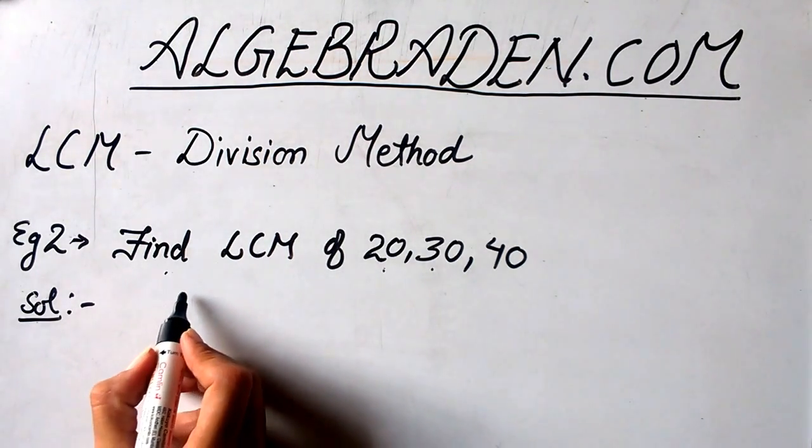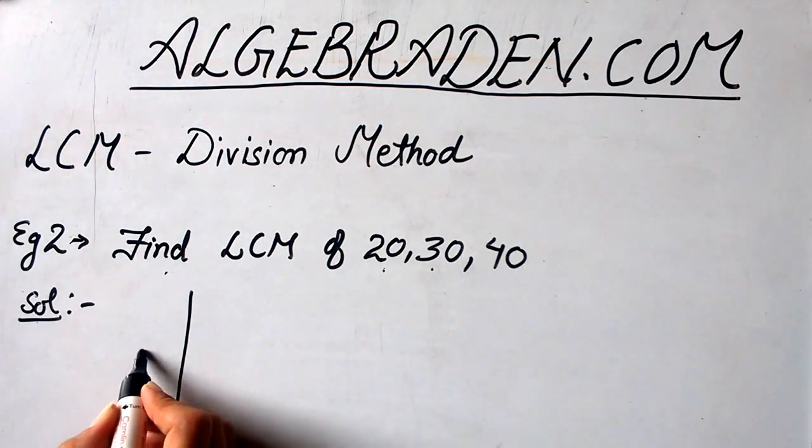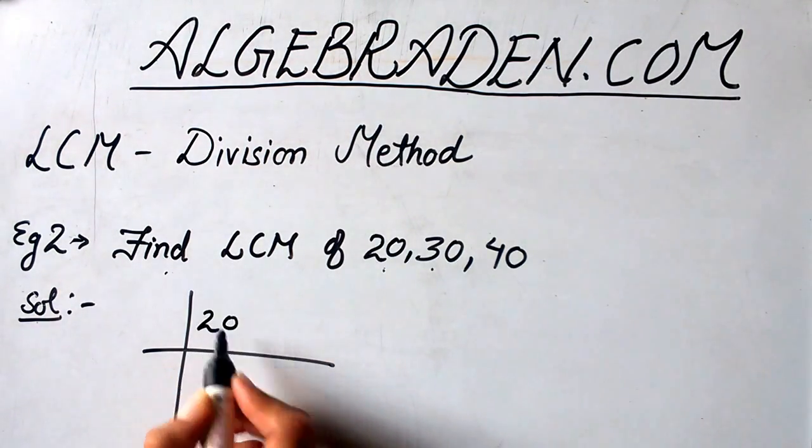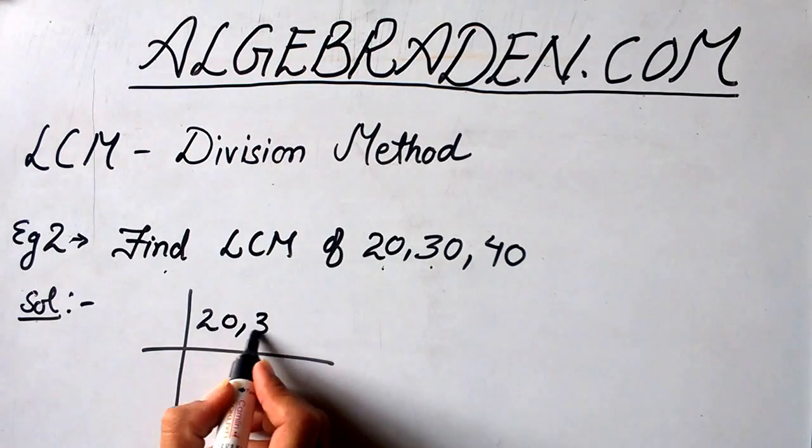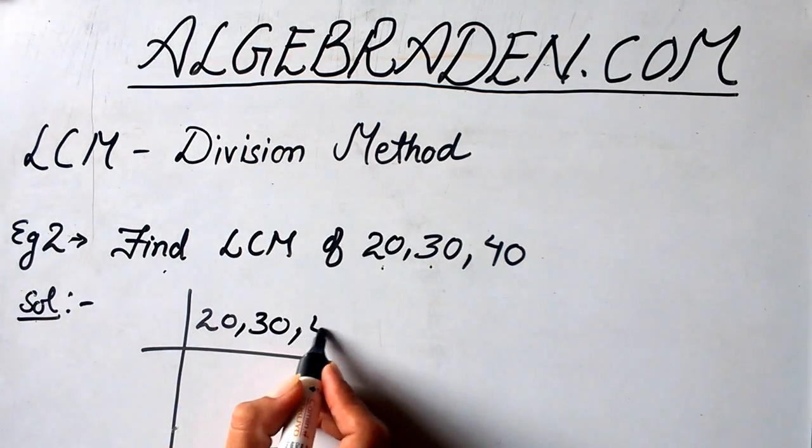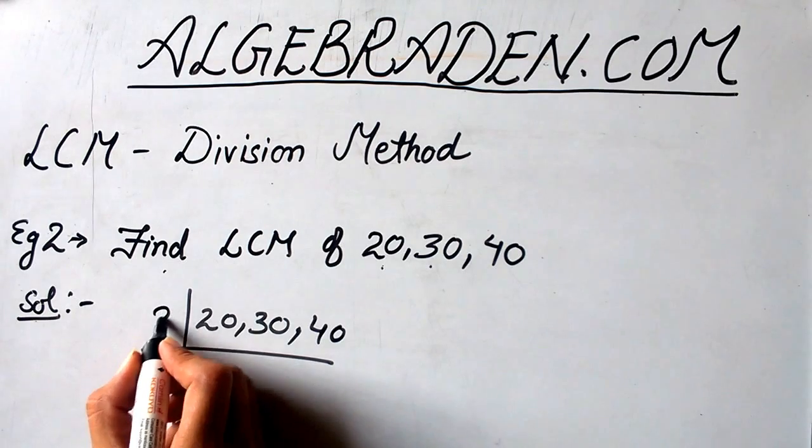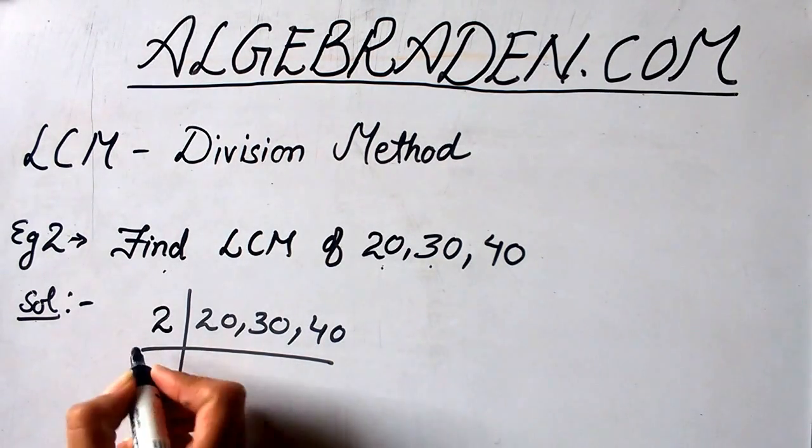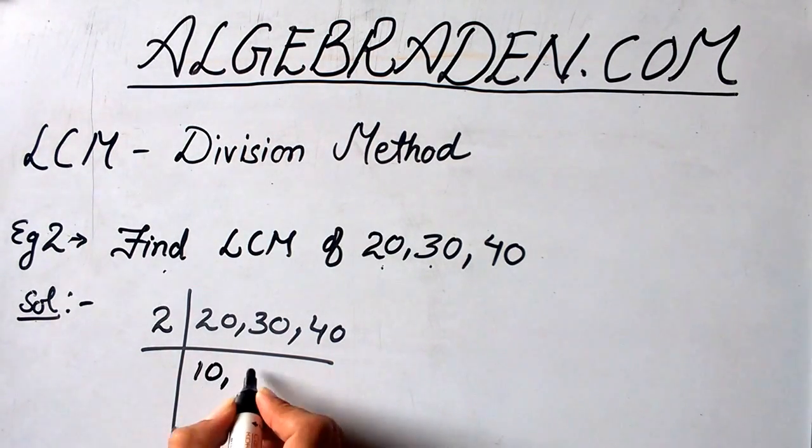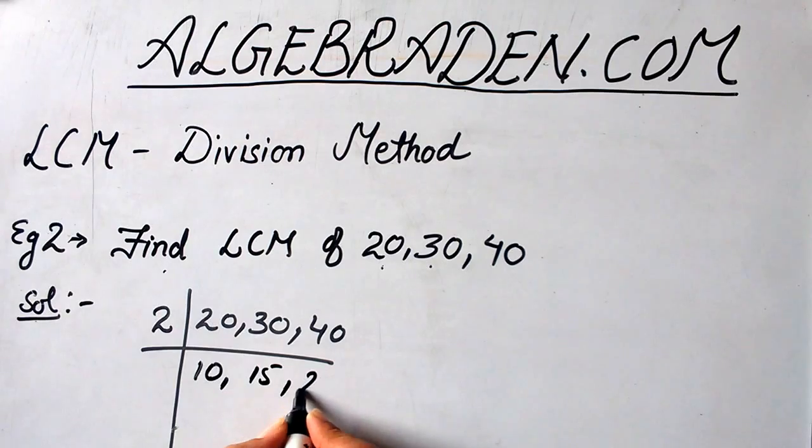To solve this, we will proceed as follows: write the given numbers on the left side. So write 20, 30 and 40. Now divide the given numbers by the least prime number which is 2. When we divide, we get 10, 15 and 20.